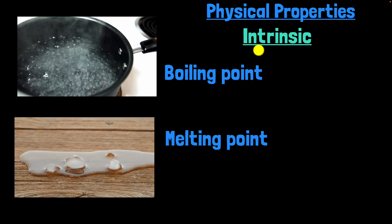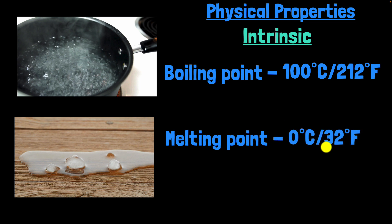And by the way, these are intrinsic properties. Remember, intrinsic properties are the one that does not depend on the amount of substance. Boiling point of water, for example, is 100 degrees Celsius or 212 degrees Fahrenheit. It does not depend about how much water you take. It's the same boiling point. So it does not depend on the amount of substance. It's an intrinsic physical property. Similarly, melting point is also an intrinsic physical property.